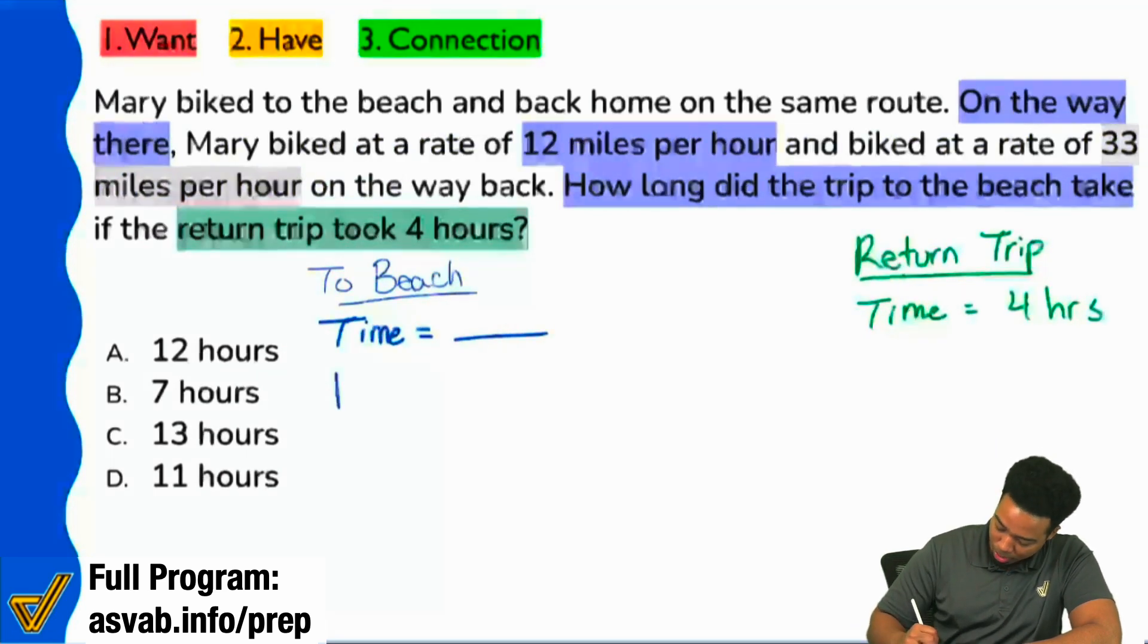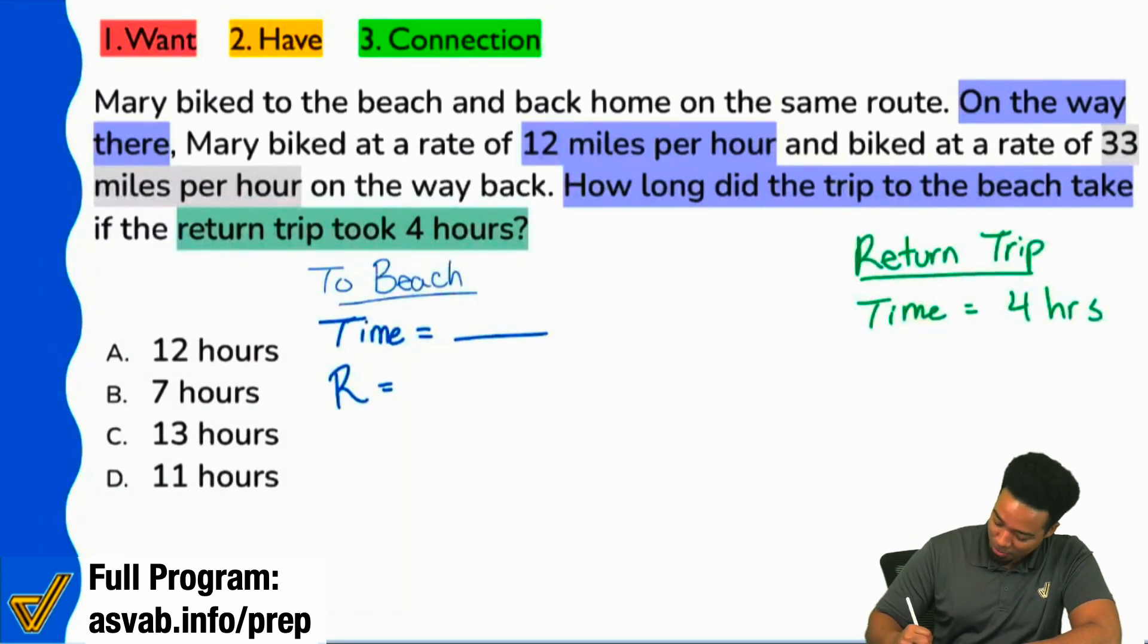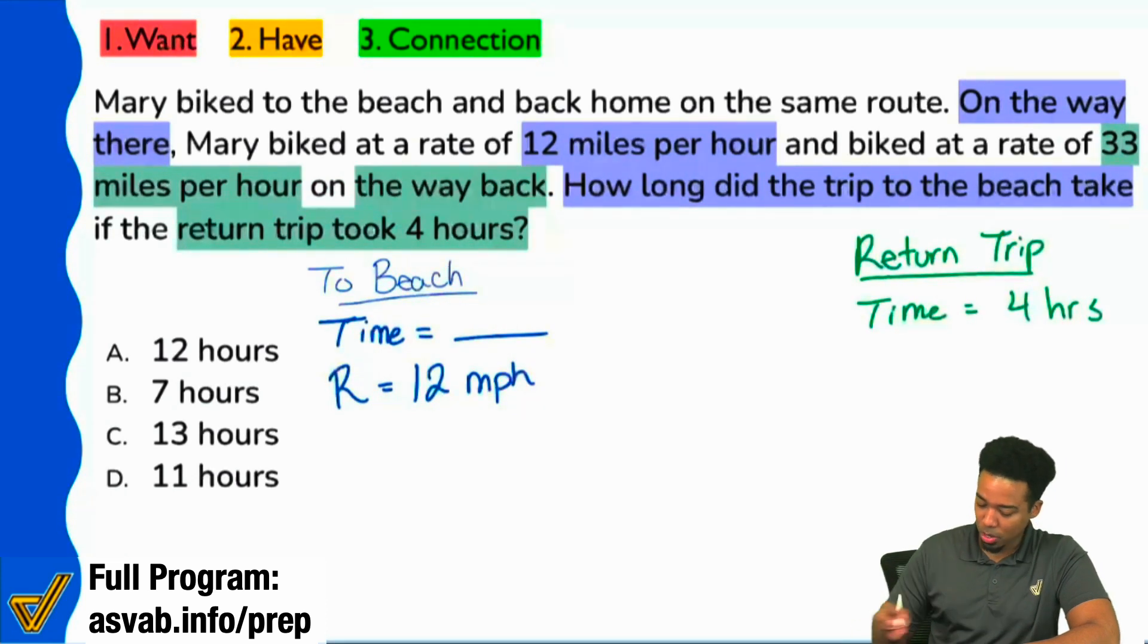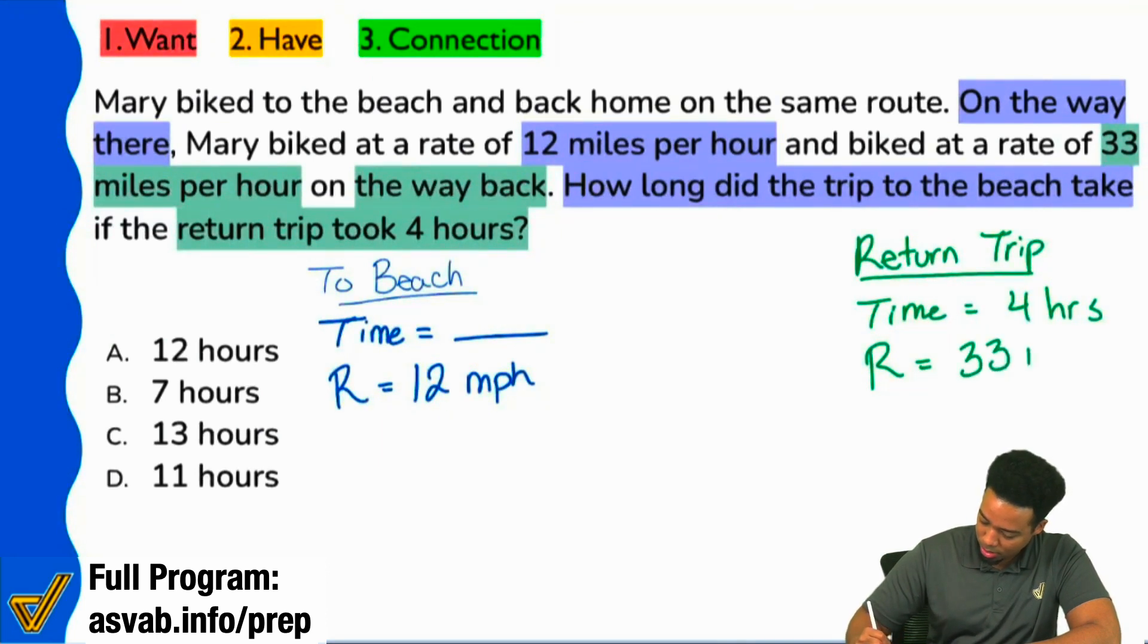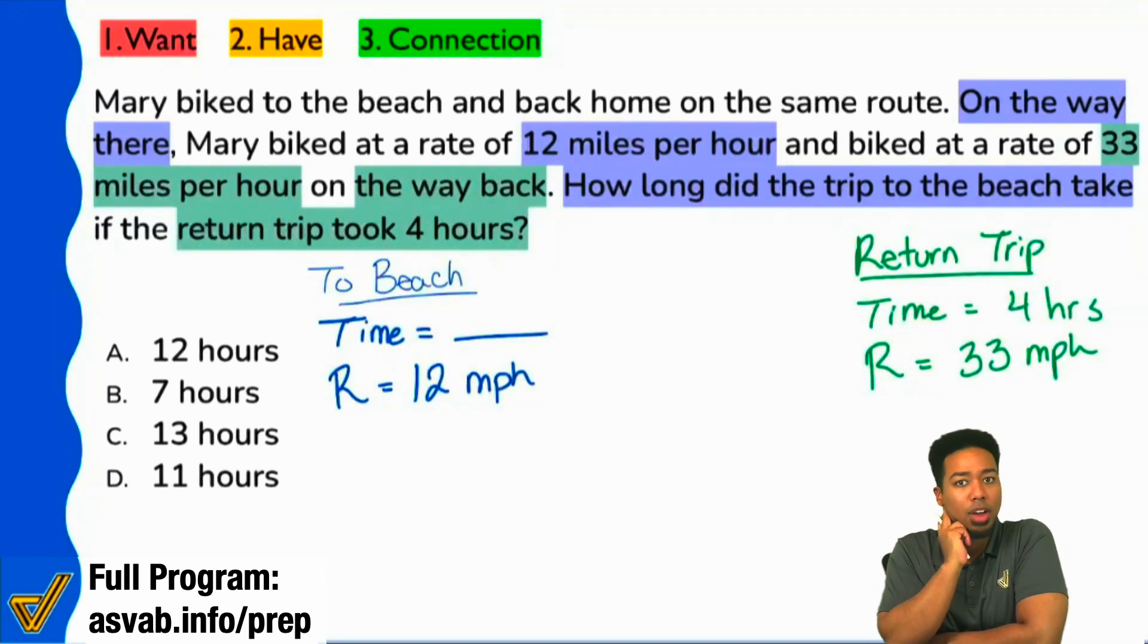So I'll write my rate over here. Is that a rate? 12 miles an hour? Thank you. Perfect. 12 miles per hour. And then it says biked at a rate of 33 miles per hour on the way back. Great. So my rate for the return trip, we see 33 miles per hour. Perfect. Splendid. Excellent.